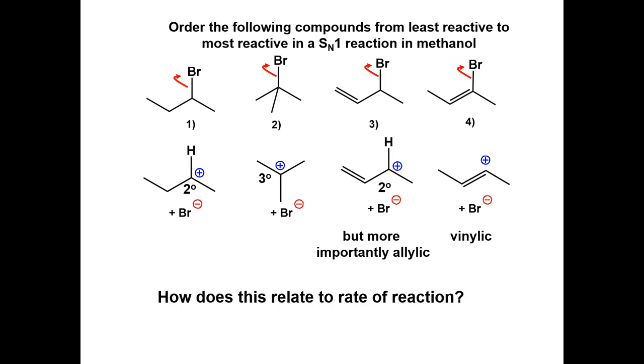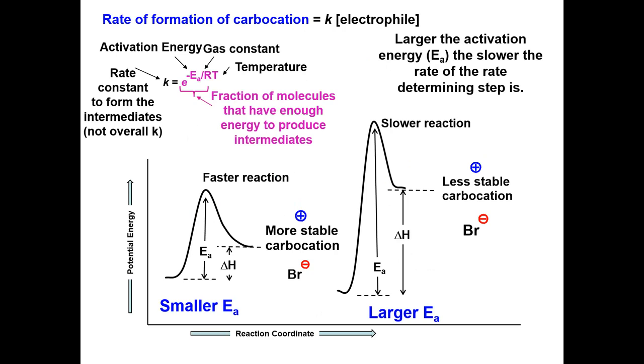How does this relate to the rate of reaction? The rate of an SN1 reaction is related to the stability of the intermediates that are formed, since the more stable intermediates will go through a pathway that has a lower activation energy. A lower activation energy means that a larger fraction of the molecules will have enough energy to reach the transition state than a reaction with a large activation energy. The reaction with a lower activation energy will proceed at a faster rate.